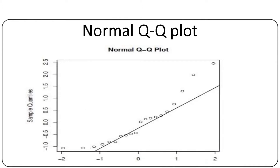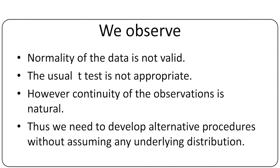In addition, we use the normal QQ plot — that is, we plot the theoretical quantiles of a standard normal variable against the sample quantiles of the standardized dataset. Under normality, most of the points are expected to lie on the straight line, but there are so many points lying above and below the line. Thus, the normality assumption is not adequate; normality of the data is not valid, and the usual choice of t-test is not appropriate.